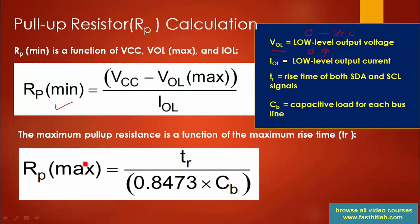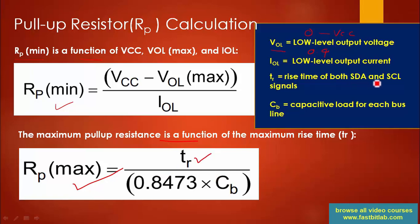To calculate the maximum pull-up resistance value, use the second equation: RPU_max = TR / (0.8473 × CB). This is a very important equation because it is a function of TR — the rise time — and CB — the bus capacitance. Here TR means the rise time of both SDA and SCL signals, and CB means the capacitive load for each bus line.